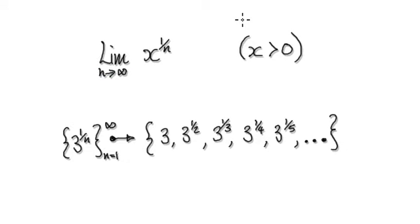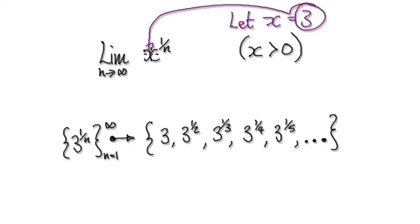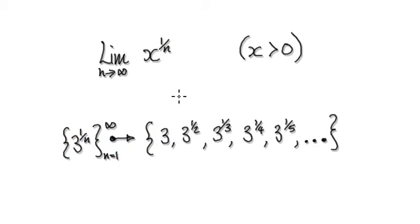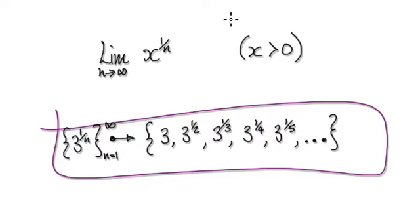For example, let's look at one particular case where x equals, let's say, 3. So you would put this into your sequence here. So that would then give you this. When n equals 1, you put it into here, so it would be 3 to the power of 1 over 1, which would be 3, and so on.